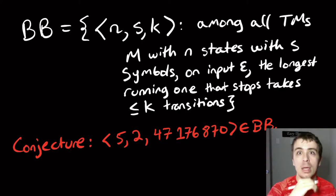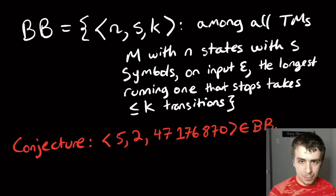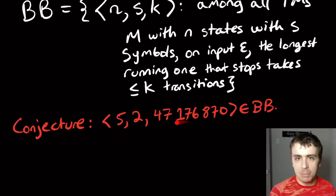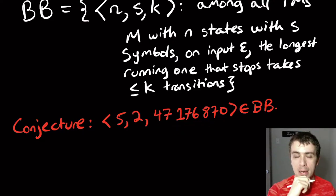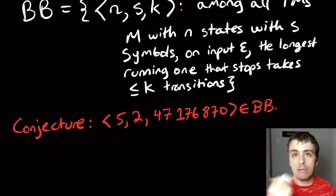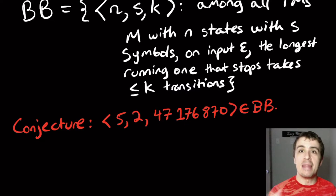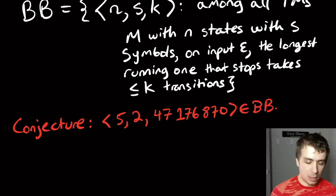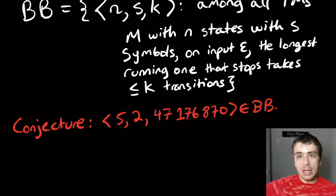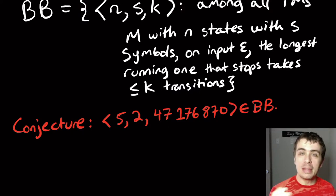There's a famous conjecture — and there's a lot of evidence to show this is true but we haven't actually proved it — that among all five-state Turing machines with two symbols, the maximum running time is about 47 million transitions. If this is not true, then we've run machines with five states and two symbols for over a hundred billion transitions and they haven't stopped yet, with no proof they run forever either. So there's an open research problem: prove that the other machines run forever, or show they eventually halt and disprove the conjecture.